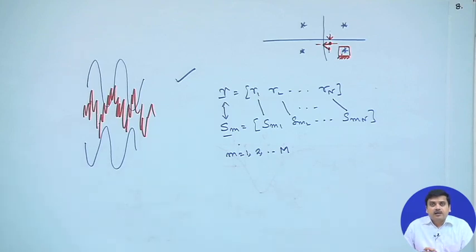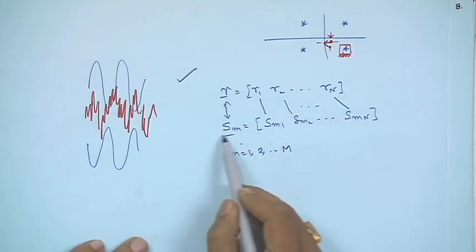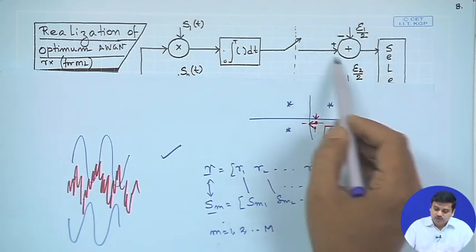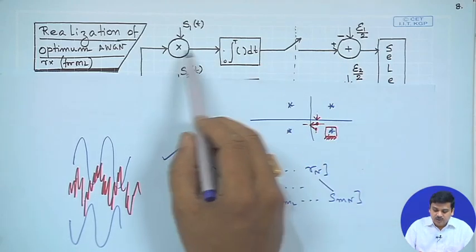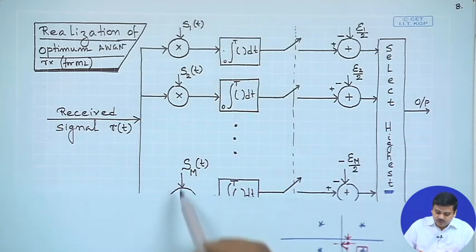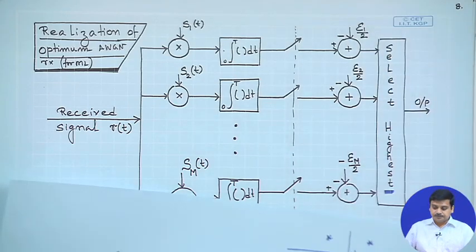We also saw that you do not need to calculate the full length of the received vector, because when computing the distance you have the norm squared of r — which is common for all S_m and can be taken out — plus the norm squared of S_m and a correlation component. In integral form, you correlate the received signal r with each possible waveform, subtract the bias term (the energy of each waveform), and select the one that maximizes this expression.